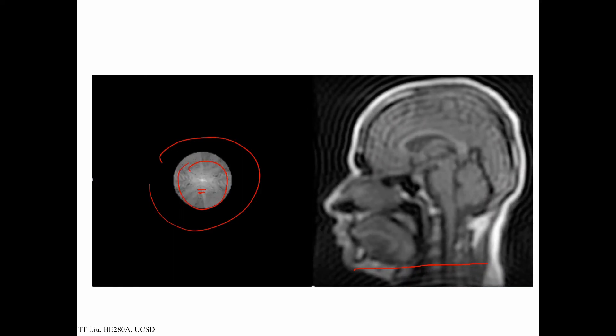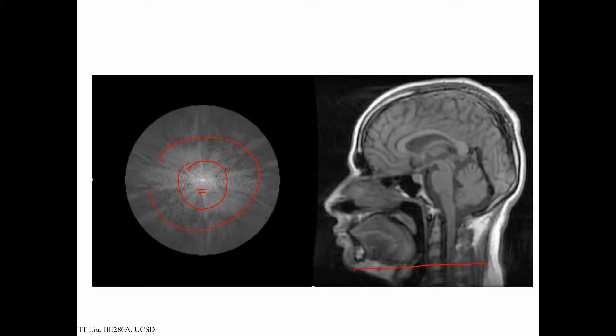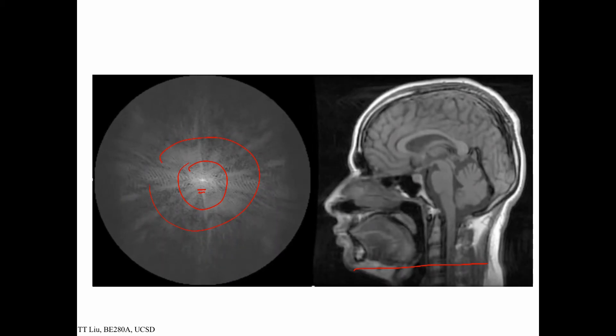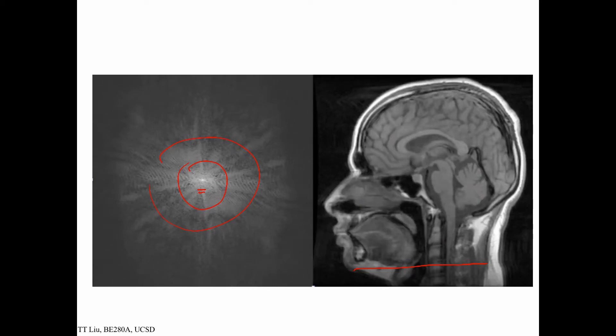In this movie, we start with energy only at the center of k-space, corresponding to the very low frequencies, and the image itself is very low frequency. As the movie plays, we add more and more data at higher frequencies and the detail fills in. Playing it again, you can watch the expansion of data in k-space and see the progressively finer high-frequency details appearing in the image.